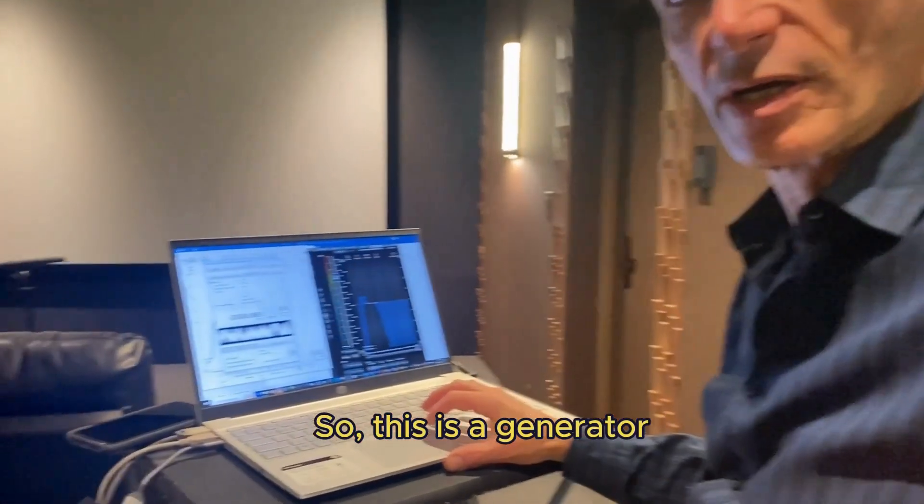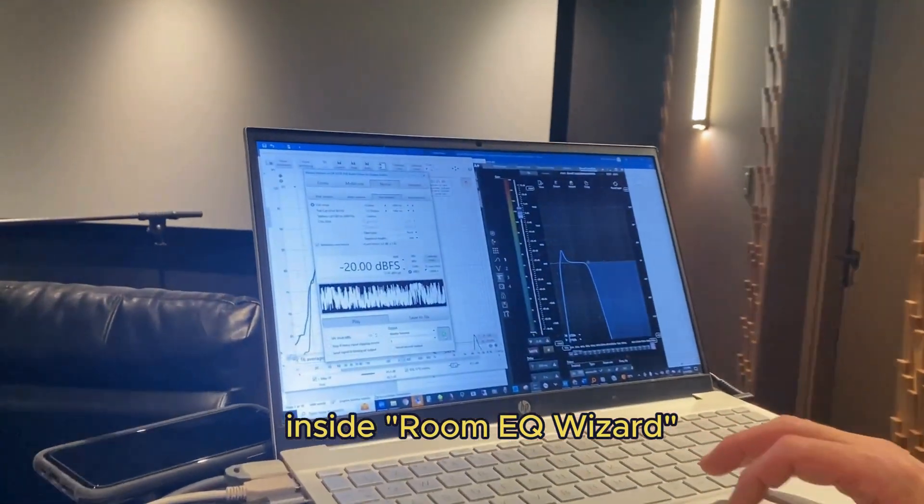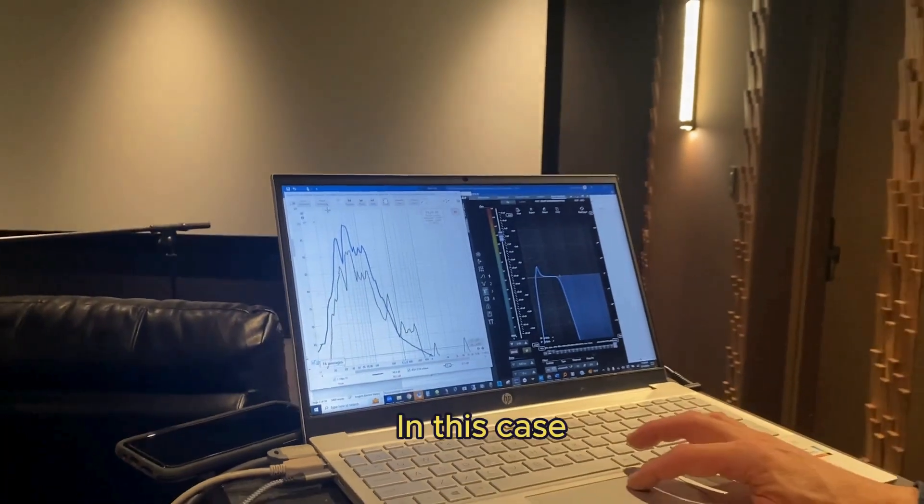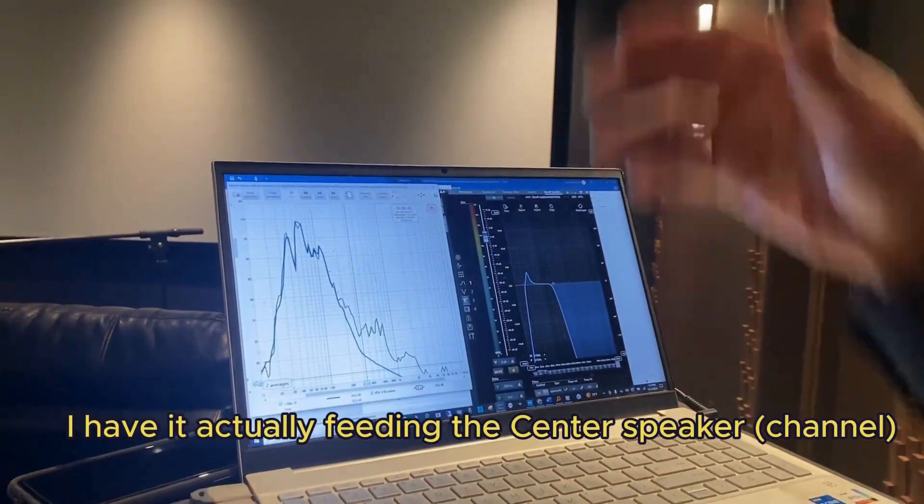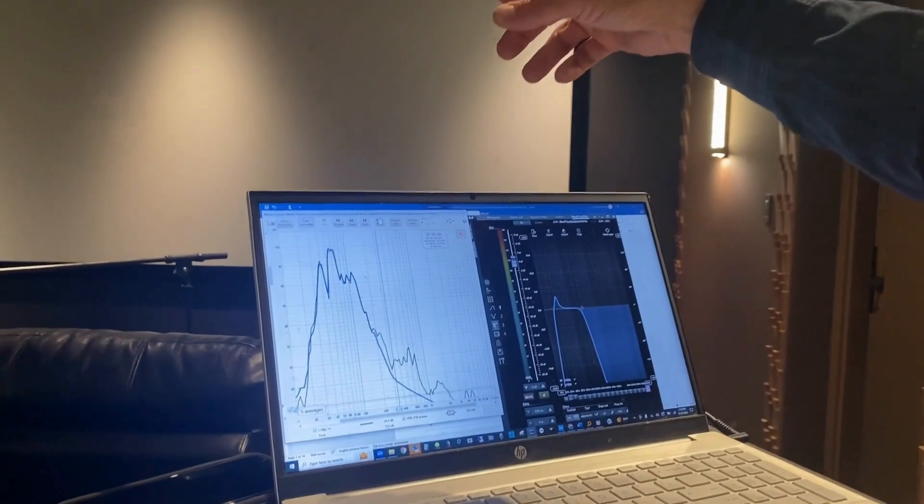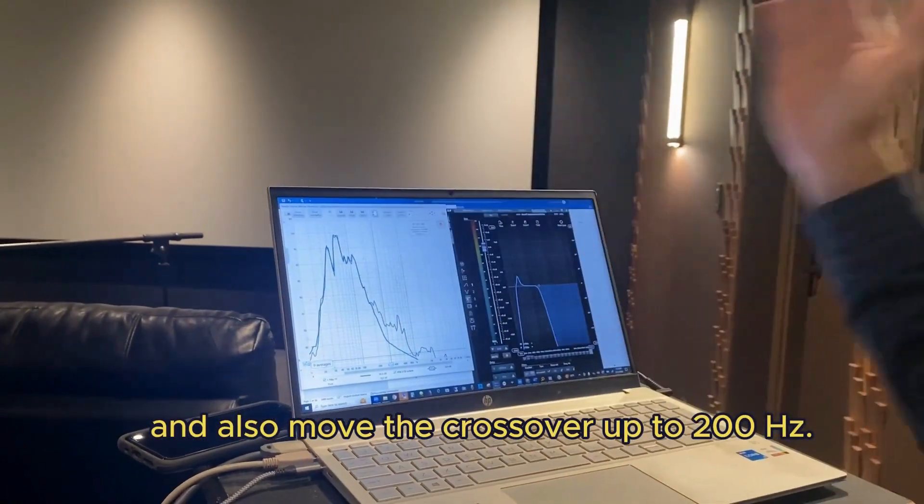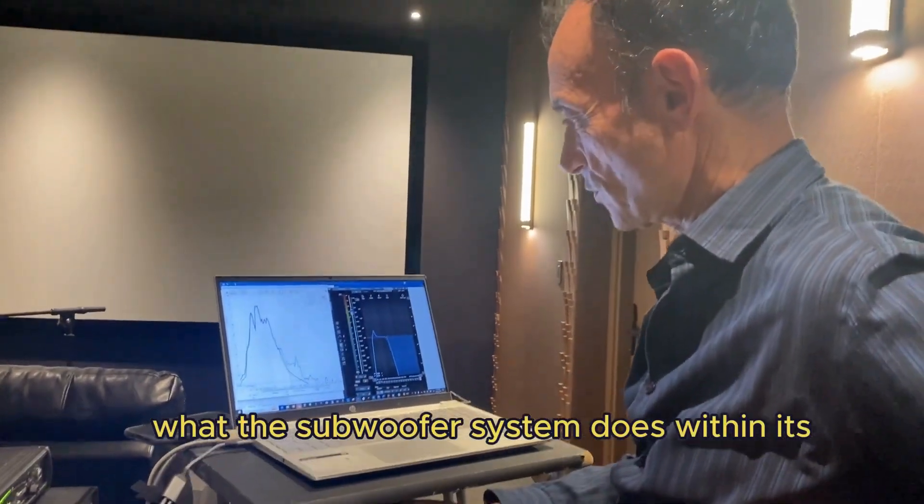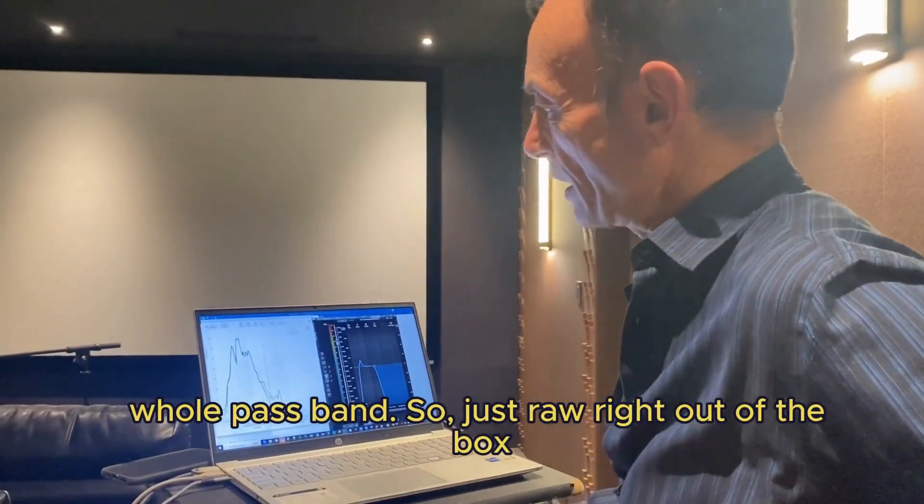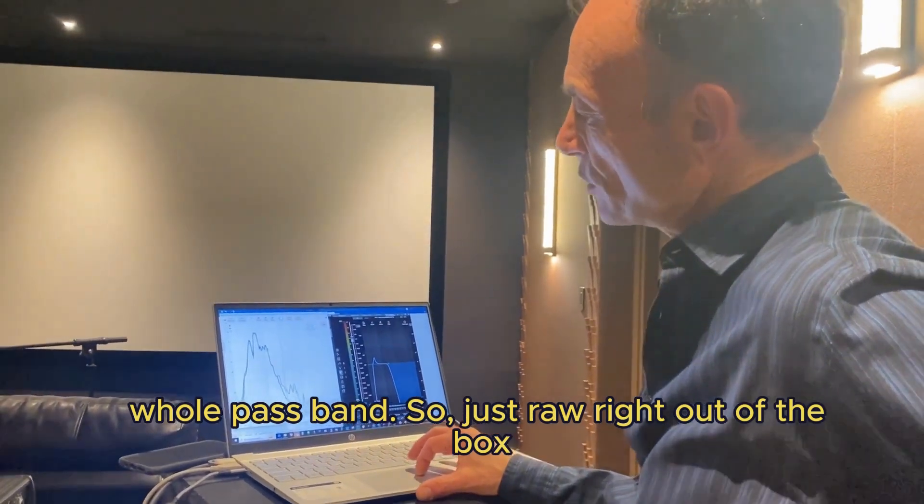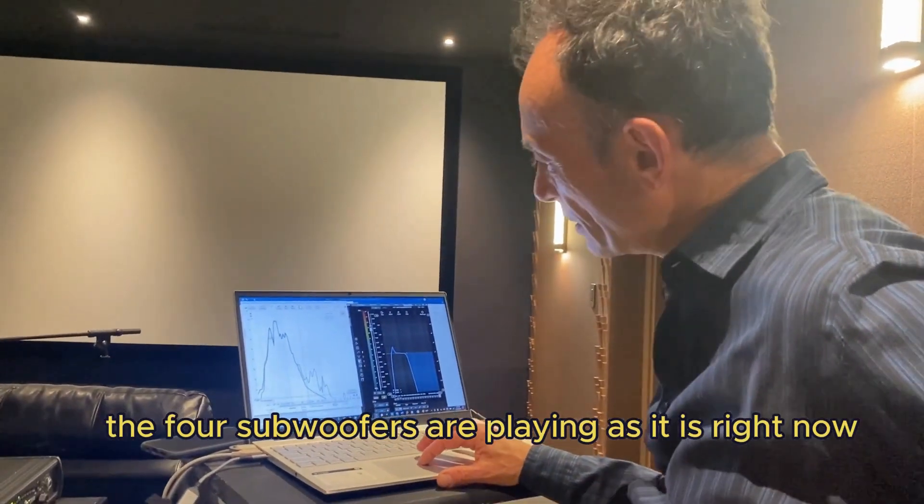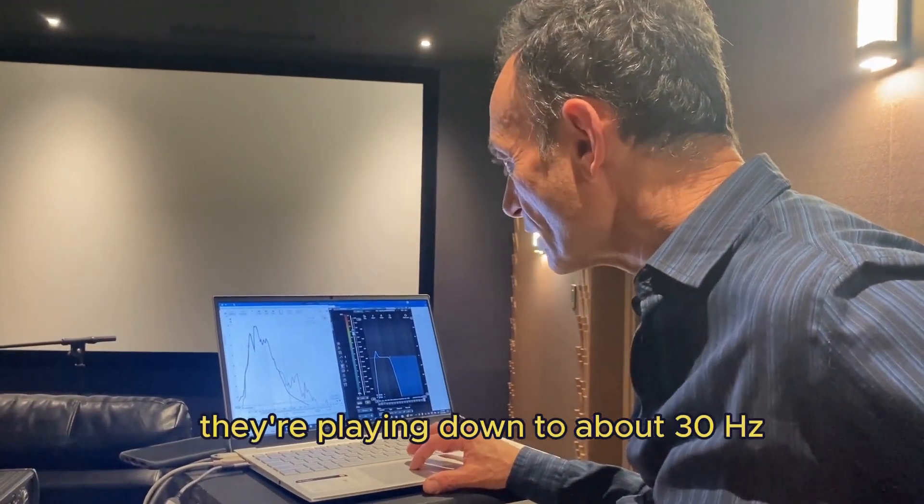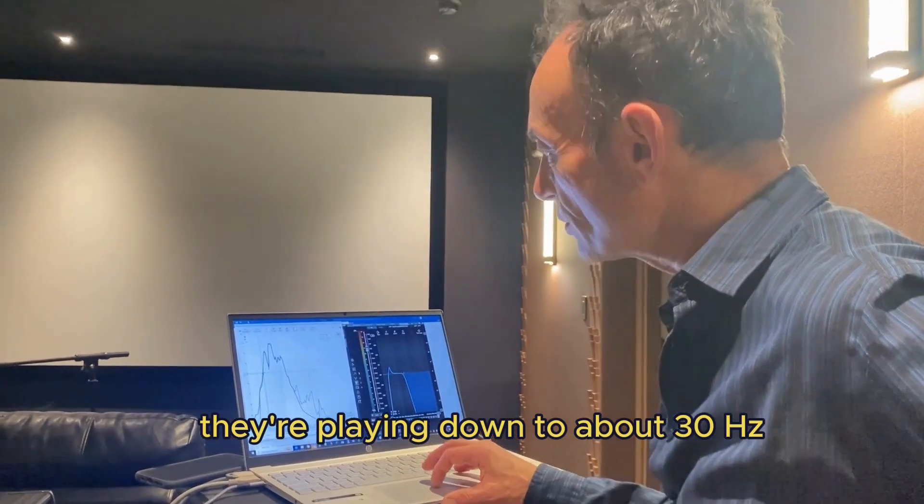This is a generator inside Room EQ Wizard. I'm playing pseudo-random pink noise. In this case I have it actually feeding the center speaker, but I've muted the center speaker and moved the crossover up to 200 hertz so we're seeing what the subwoofer system does within its whole passband. Right out of the box, the four subwoofers are playing down to about 30 hertz.